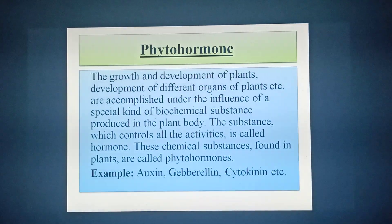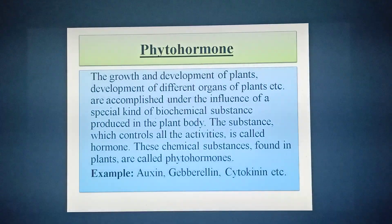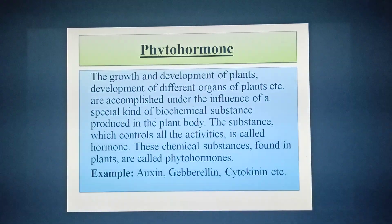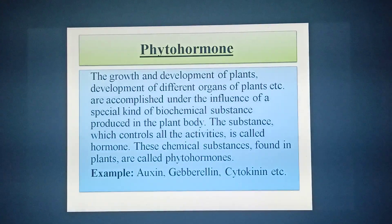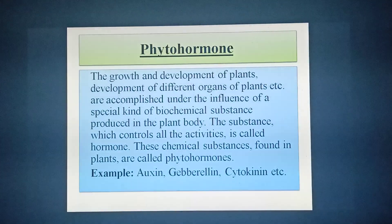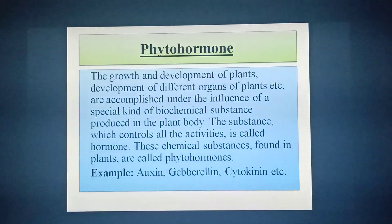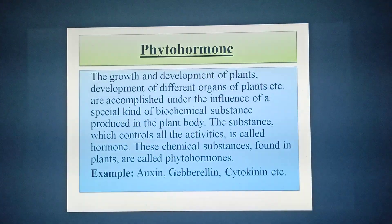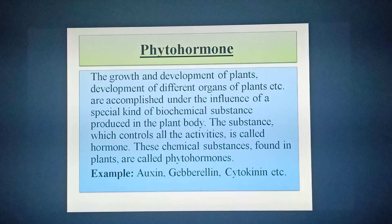The growth and development of plant, development of different organs — that means the events of the life of the plant body — are accomplished under the influence of a special kind of biochemical substances. These biochemical substances are produced naturally in the plant body. The substances which control all the activities are called hormones. The meaning of hormone is chemical messenger. These chemical messengers are produced naturally in the plant body and control all the physiological activities and all the events of the life of the plant.